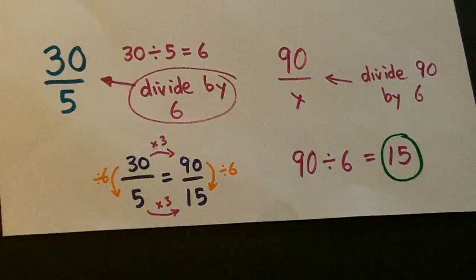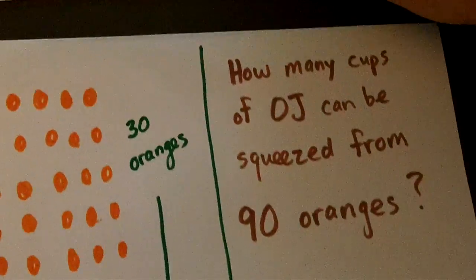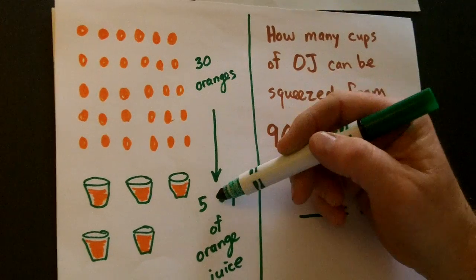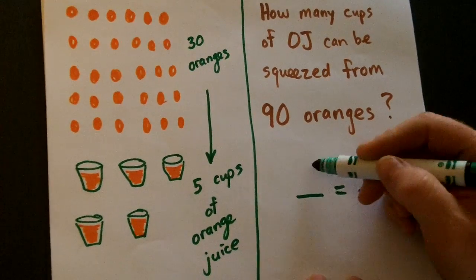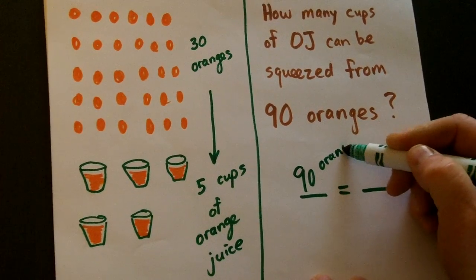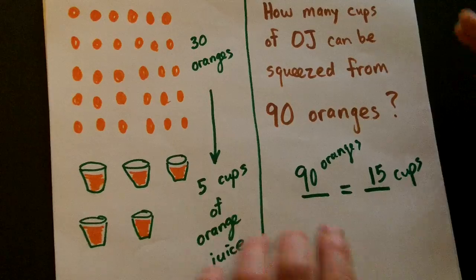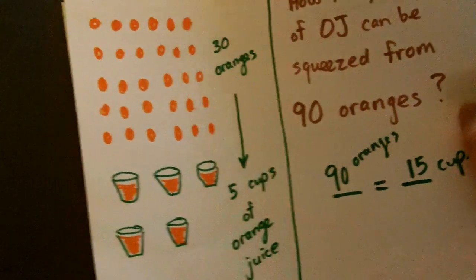So, that says that if 30 oranges can make five cups, then 90 oranges can make 15 cups. All right. Let's go to our next problem here.